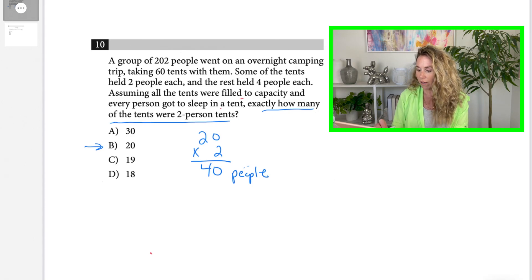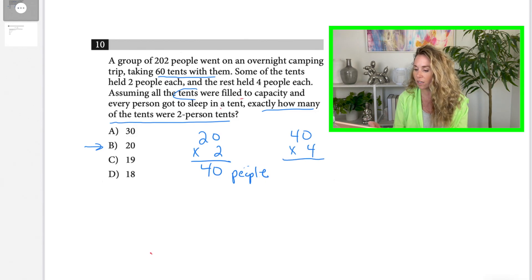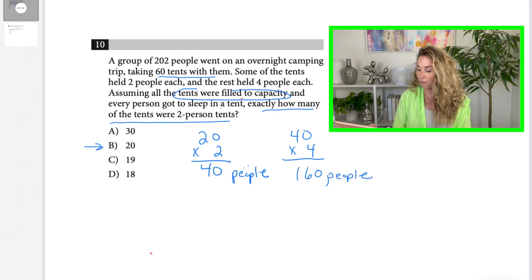Now, if there were 20 two-person tents, it said they took 60 tents with them. So that would mean there's 40 four-person tents. So I'm going to multiply 40 by 4 because they said all the tents were filled to capacity. So that's 160 people. Now when I add those together, I get 200. Does that match what the problem says?